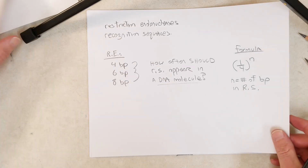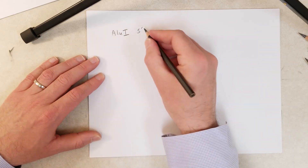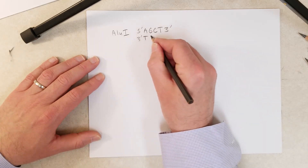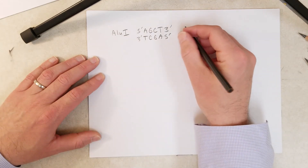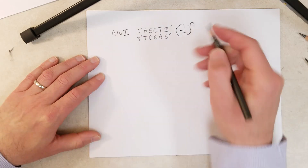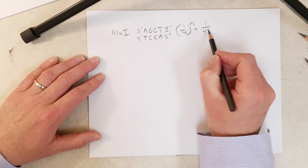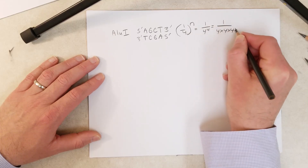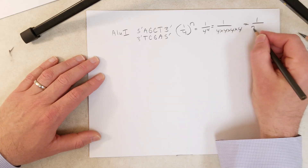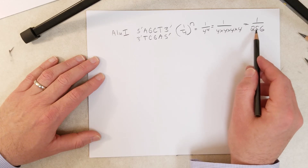Let's do an example. We've seen the enzyme ALU1, which has a recognition sequence of AGCT — a four base pair recognition sequence. If we use the formula, one-fourth raised to the n, where n is the number of base pairs in the recognition sequence, that reduces to one over four to the fourth power, which equals one over 256, since four times four times four times four equals 256.